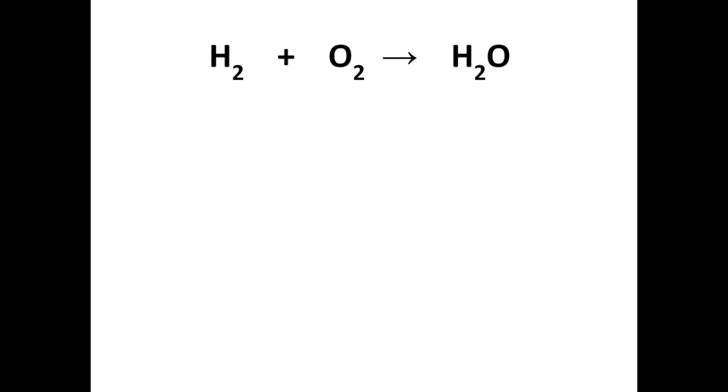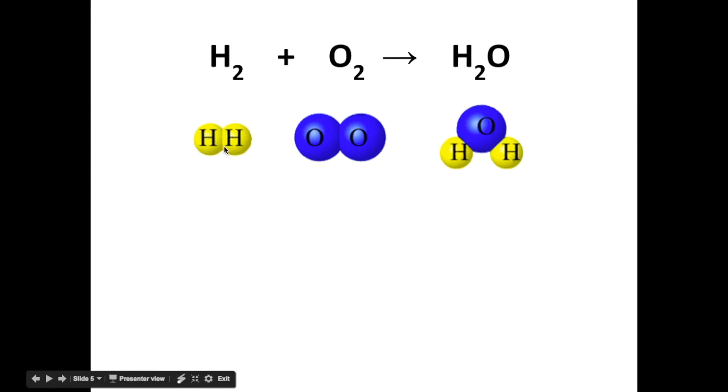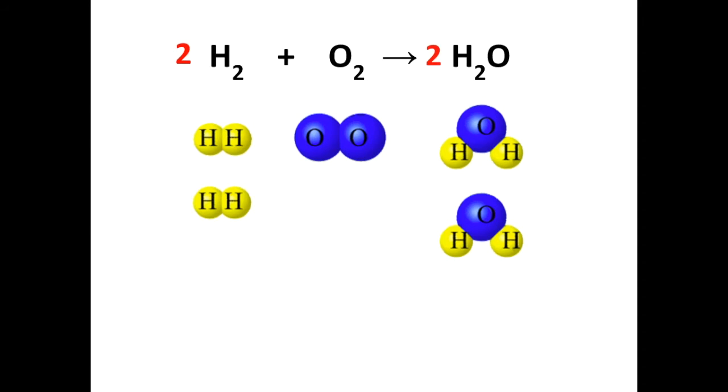And we'll finish with this one. H2 plus O2 making H2O. So there's the molecules. Again, you can see that we've got two H's either side, which is fine, but we've got two O's on the left and only one on the right. So we bring another water molecule into play, which has doubled up those hydrogens. So we're going to need two H2 molecules. And so it looks like that.